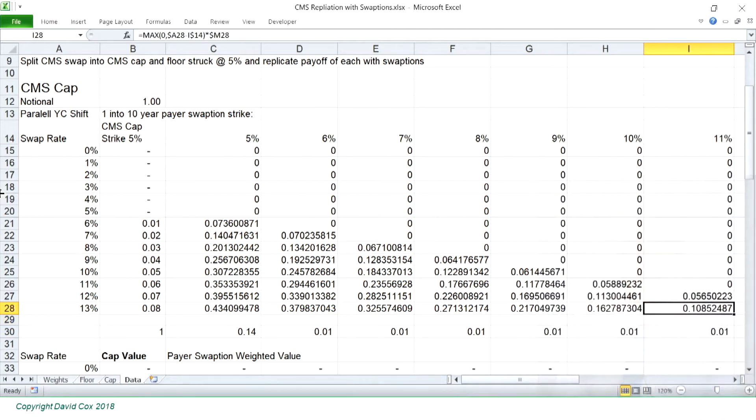If we start off on the left-hand side of the sheet here, you can see I'm plotting a range of different swap rates from 0% all the way through to 13%. And I'm looking at the payoff.